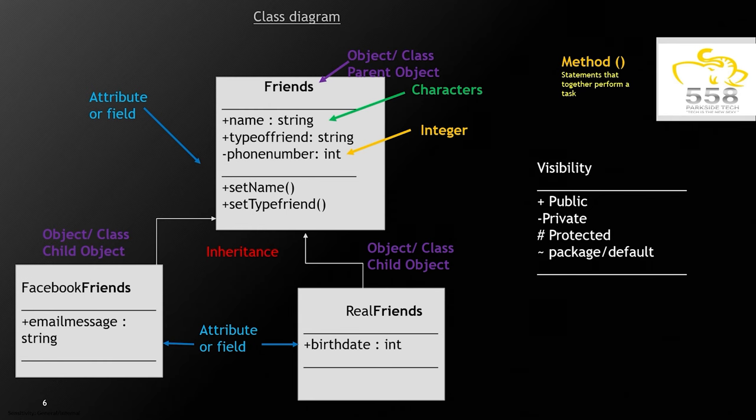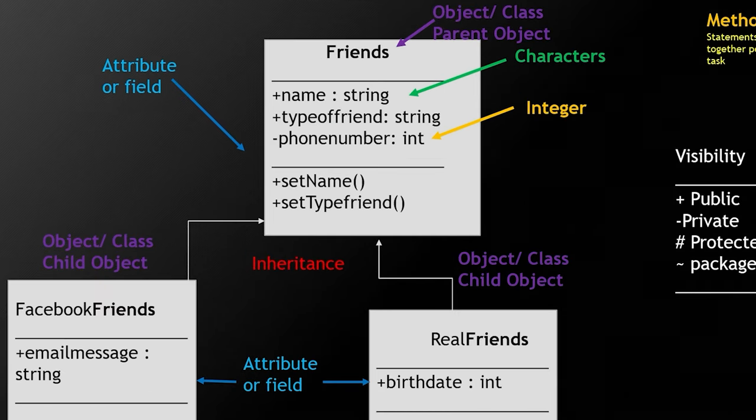And in this case, we're depicting a friend object. And that friend object is going to be inherited by real friends and Facebook friends. And in this case, we call those child objects, the parent object being friends.